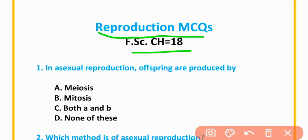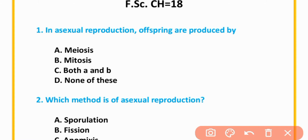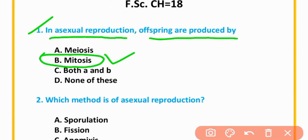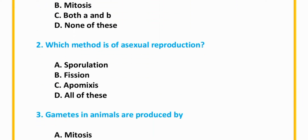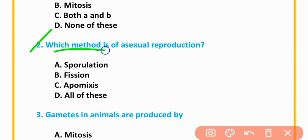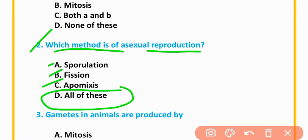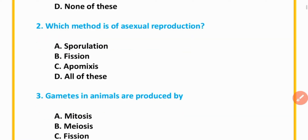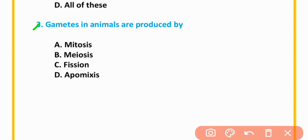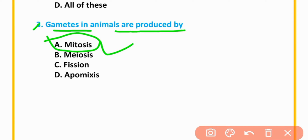Reproduction MCQs, Chapter 18. MCQ number 1: In sexual reproduction, offspring are produced by mitosis — option B is correct. MCQ number 2: Which method is of asexual reproduction? All of these — A, B and C. MCQ number 3: Gametes in animals are produced by mitosis — option A is correct.